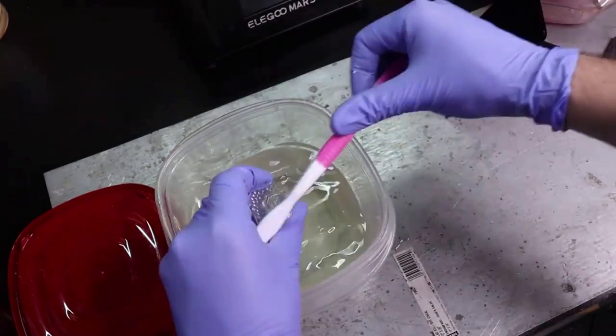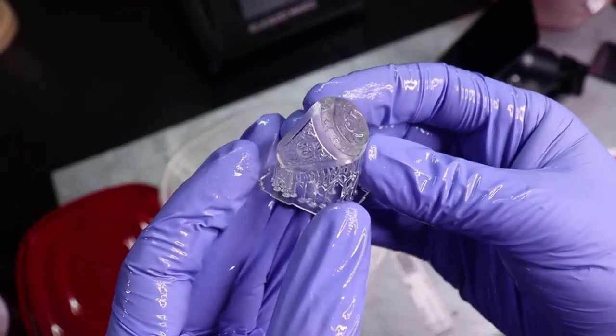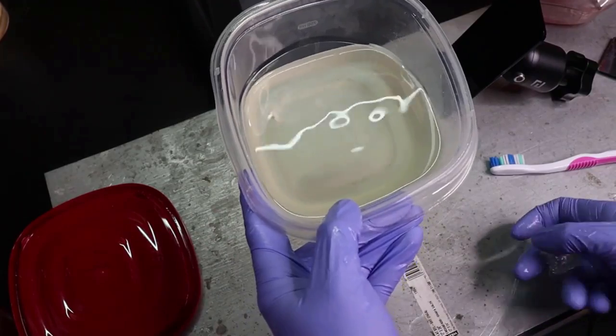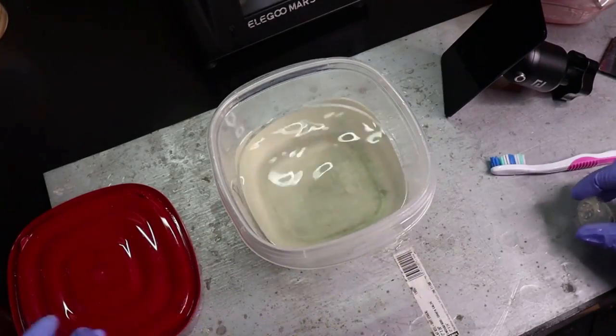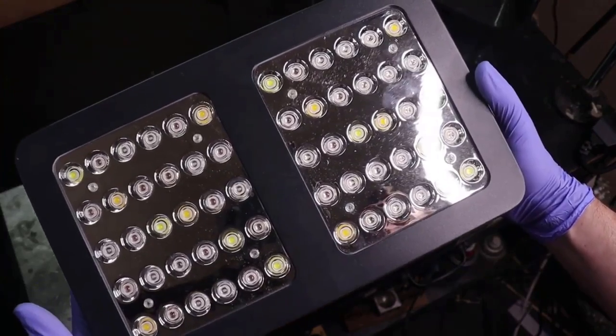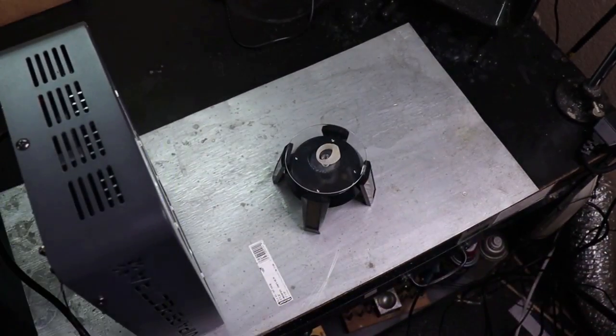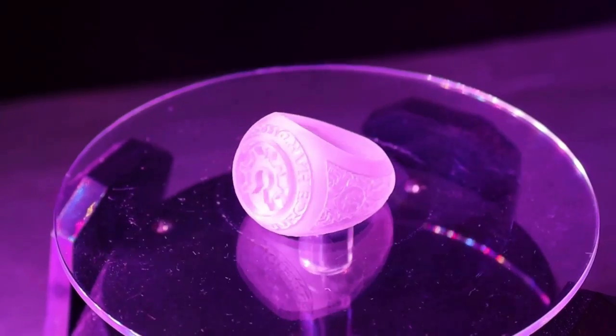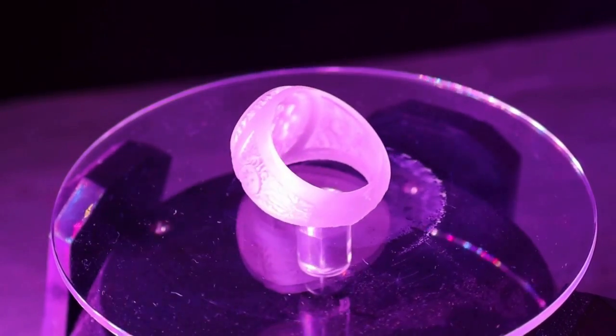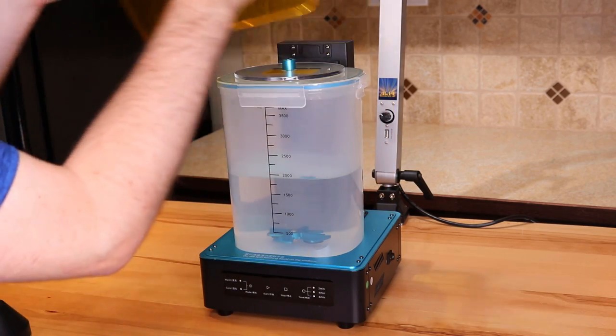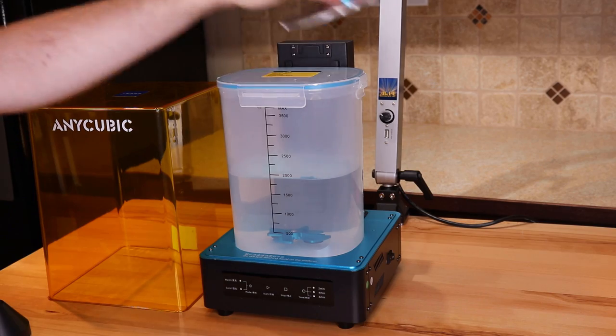So basically, this makes it so you can clean up your pieces without having to do it all by hand with a toothbrush and then having to figure out how you're going to cure them without burning them. You can put them in sunlight for a little bit, or you can set up a UV light and a turntable, which could get you up to the $50 to $100 range, depending on what you get. And this all-inclusive system is a little under $200 when you find them on sale. So honestly, it's going to be up to you and your budget.